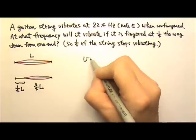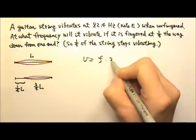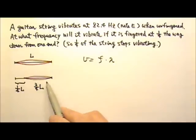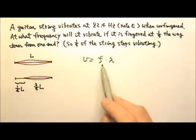Let's see. Speed equals frequency times lambda. Before and after the string is fingered, one of those three things stays the same. Which one is it?